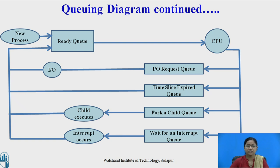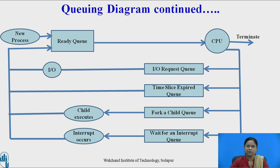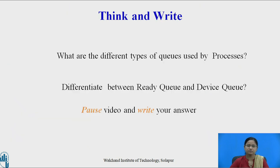All processes preempted from the CPU enter the ready queue. The scheduler again selects a process from the ready queue, and the process eventually terminates — meaning it completes its execution. Now, pause the video and think about the different types of queues used by processes, and differentiate between ready queue and device queue.